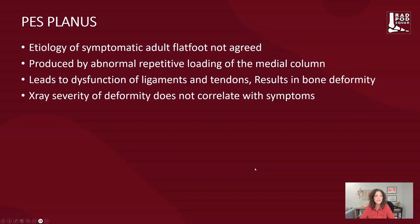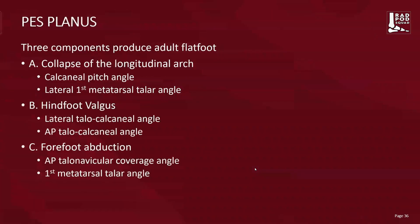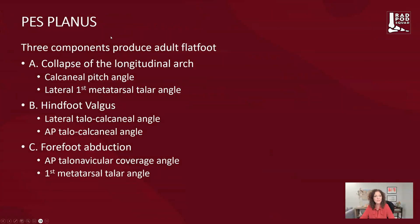Moving on to pes planus — the etiology of symptomatic adult flatfoot is not universally agreed upon. It may be produced by abnormal repetitive loading on the medial column, wearing down the medial structures. It can lead to a dysfunctional loss in ligament, tendon, and structure, and definitely bone deformities. The x-ray severity, we know, does not always correlate with the symptoms. In looking at the components of pes planus, we want to identify three components that occur in adult flatfoot.